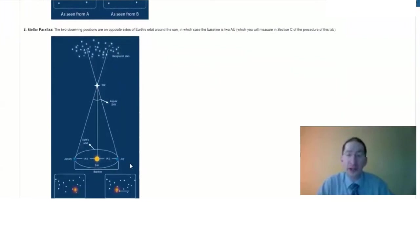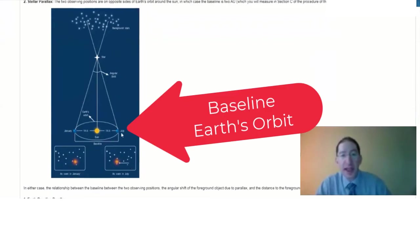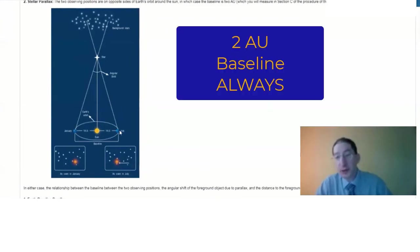Now, the other scenario is for when you want to measure the distance to objects much farther away, such as nearby stars, and for this you need a much larger baseline. So instead of using Earth's diameter, we use the diameter of Earth's orbit, and since the radius of Earth's orbit is 1 AU, the diameter is 2 AU, two astronomical units, always when doing a stellar parallax calculation.